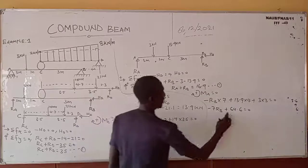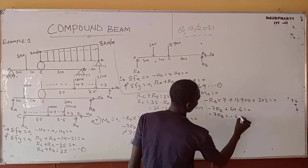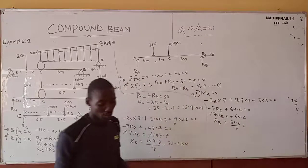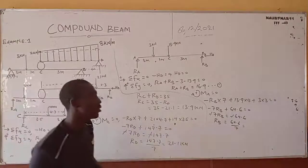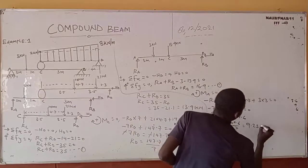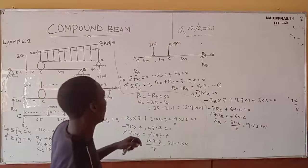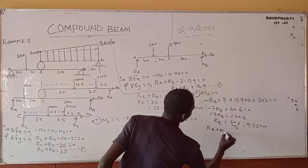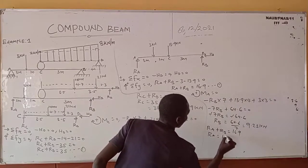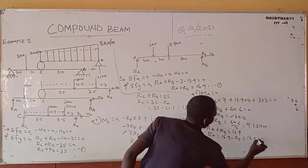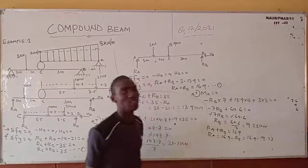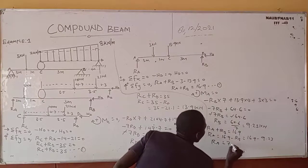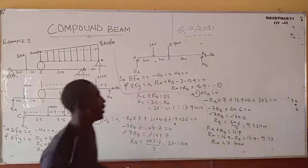Going back to equation 2: RUA plus RUB equals 16.9. So RUA equals 16.9 minus RUB, which is 16.9 minus 9.23, giving RUA equals 7.7 kilo-newtons. That ends the calculation.